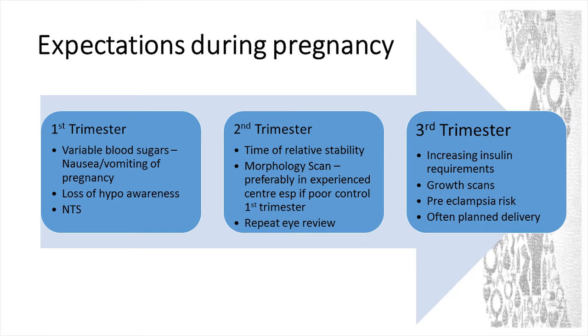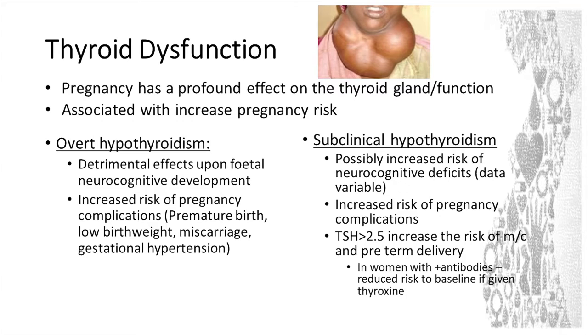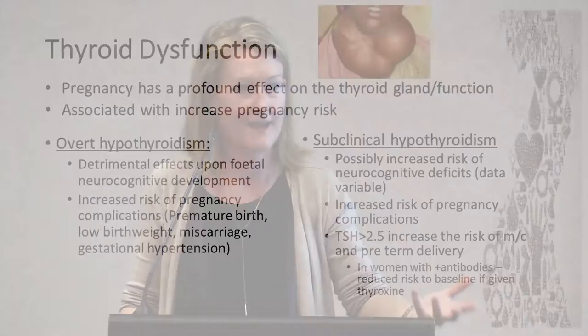They'll often have growth scans and we watch them carefully for preeclampsia, often with a planned delivery. Briefly talking about thyroid dysfunction — if anyone has questions, happy to address them. It has a profound effect on thyroid structure and function and is associated with increased pregnancy risk. Overt hypothyroidism is really well recognised to have problems with baby's development, particularly neurocognitive development, and has an increased risk of pregnancy complications. Subclinical hypothyroidism possibly has increased neurocognitive deficits, although the data is still reasonably conflicting — there were some early studies suggesting quite a significant impact, with later studies having conflicting data.